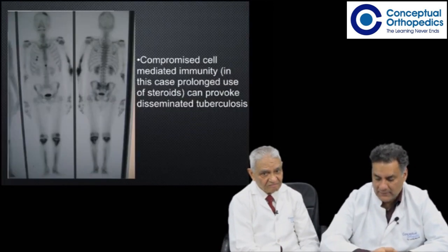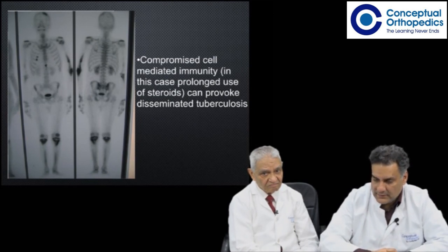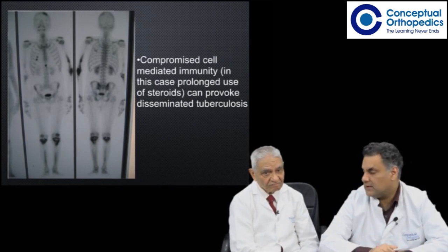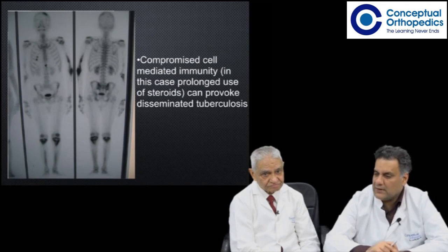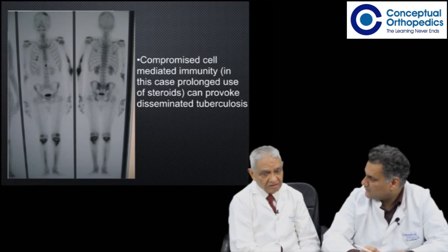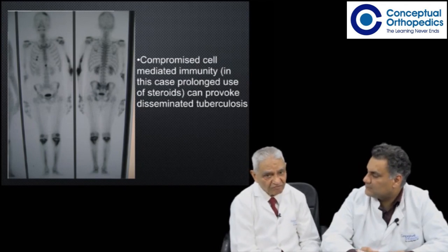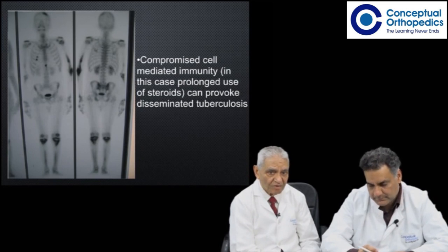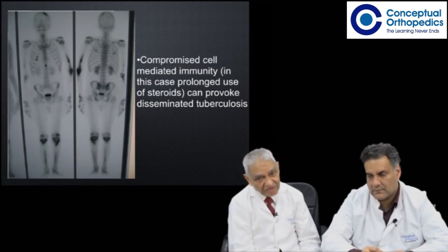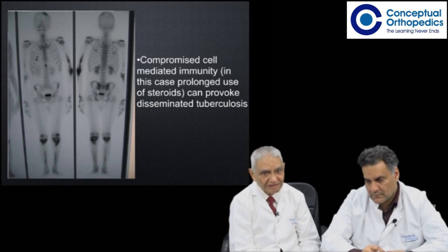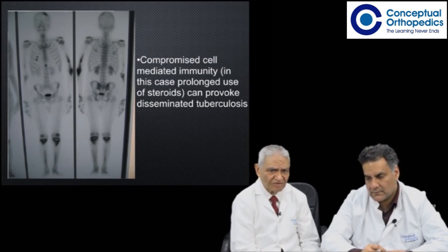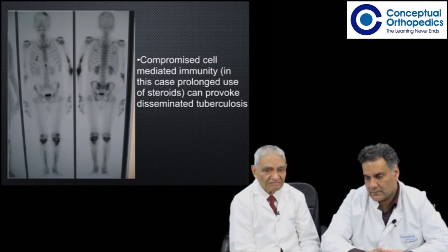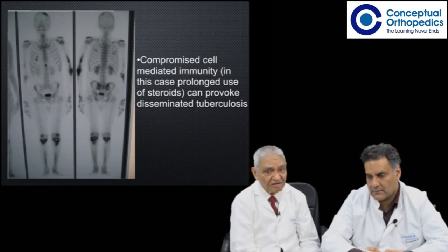Compromised cell-mediated immunity can provoke disseminated tuberculosis, showing multiple hotspots throughout the entire body. Bone scans are not requested very frequently, but this patient came with such a scan showing hot areas in a reference pattern. This patient recovered remarkably with anti-TB drugs and was followed up for about seven or eight years.